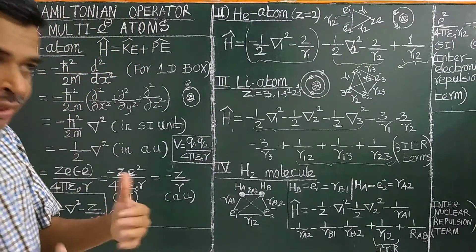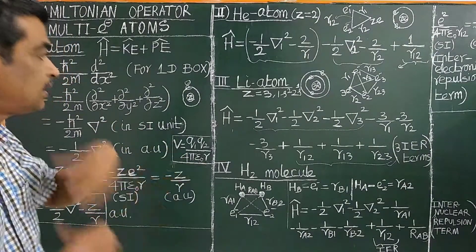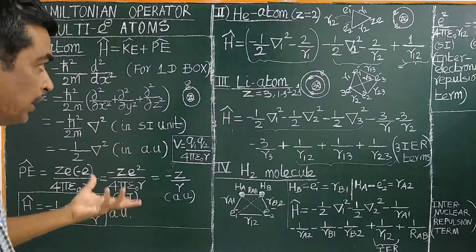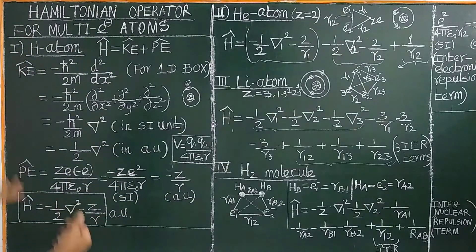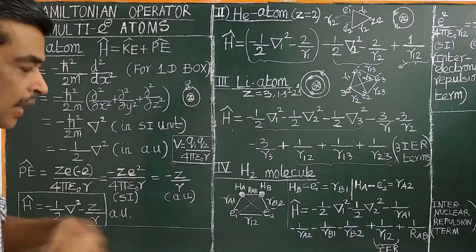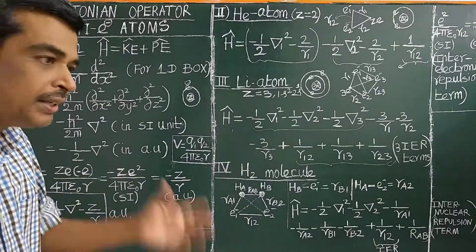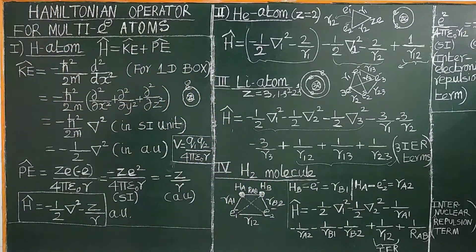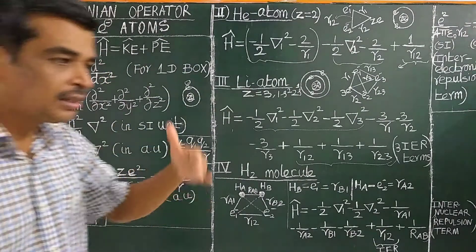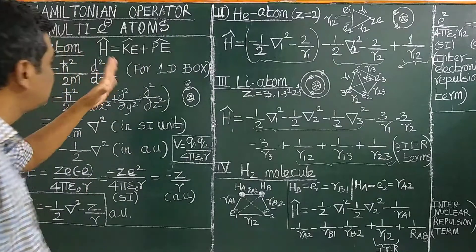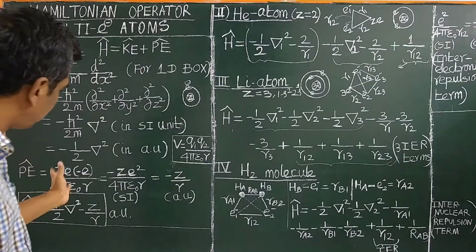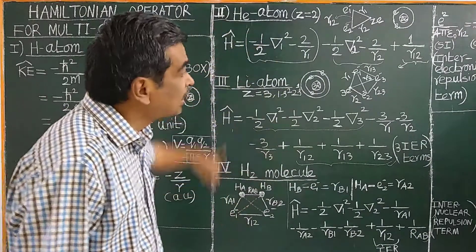Programs are available to construct Hamiltonians for multi-electron atoms. For example, for methane, benzene molecules, etc., you can write a program to construct the Hamiltonian operator instead of doing it by hand. Now, before we look at poly-electron atoms or many-electron atoms, let us first consider the hydrogen atom, as it is the simplified case from which the others are constructed.